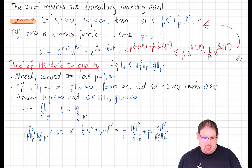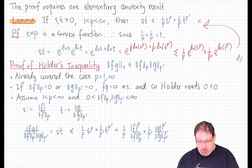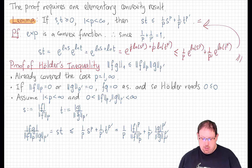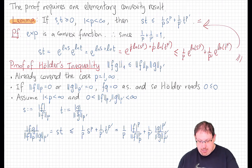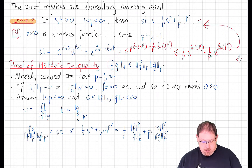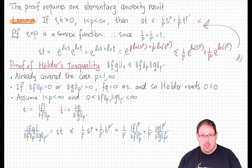Hölder's inequality is really just that simple convexity inequality applied to normalized versions of f and g in place of s and t. Let's note a few things. We've already shown that the cases p equals 1 or infinity are straightforward from the definition of the L∞ norm. Moreover, if either term on the right-hand side is 0, then either f or g is almost surely 0, which means fg is almost surely 0, so the L1 norm is also 0. We can safely assume f and g are in their respective Lp spaces, since if the right-hand side is infinite there is nothing to prove. So for the rest of the proof, we assume p is strictly between 1 and infinity, the Lp norm of f is finite and strictly positive, and the Lp' norm of g is finite and strictly positive.